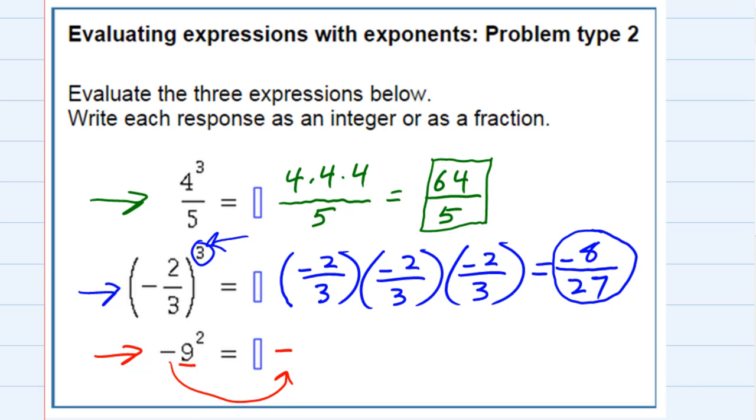And then since the 9 is being squared, that would be 9 times 9. So that negative just keeps coming along. 9 times 9 is 81. Our answer is negative 81. This negative that is out in front is the same negative that we started with. We just brought it along and only the 9 was actually being squared.